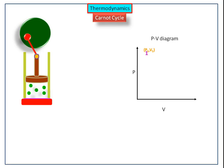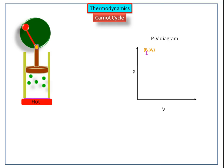Now the system expands at constant temperature. To maintain the constant temperature, the system absorbs heat from the surroundings. This is called isothermal expansion. Because the system does work on the surroundings, it moves to the second position, where the pressure decreases from P1 to P2 and the volume increases from V1 to V2. This is at constant high temperature T2, and Q2 is the heat absorbed by the system.